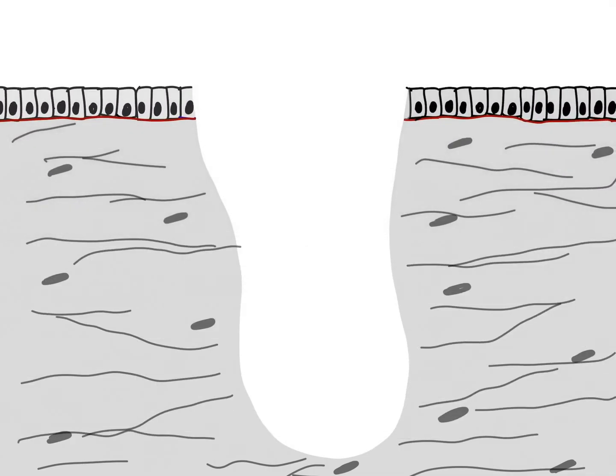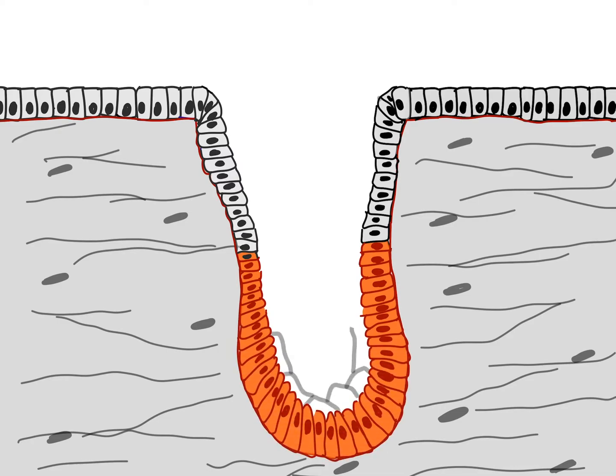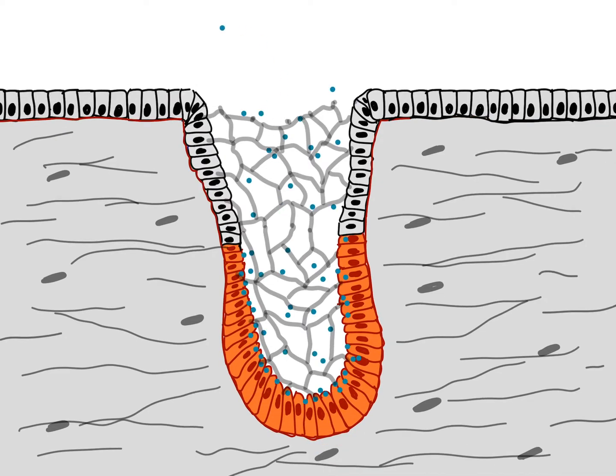In the first kind, the gland retains its connection with surface epithelium, where the connection forms tubular ducts lined with epithelium through which secreted material leaves the gland. This is termed an exocrine gland.